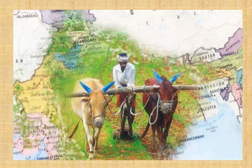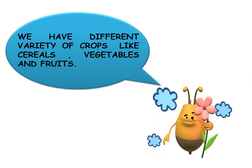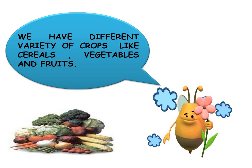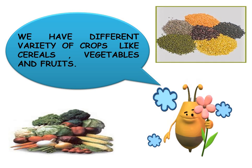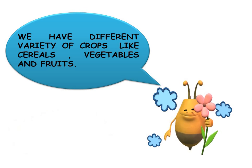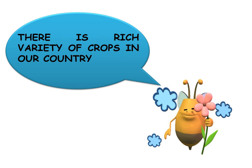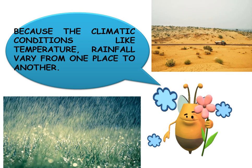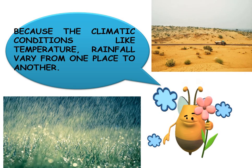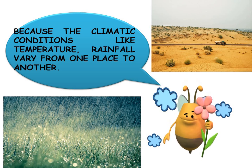We have different varieties of crops like cereals, vegetables, and fruits. Why is there so much variety of crops? Because climatic conditions like temperature, rainfall, and humidity vary from one place to another.